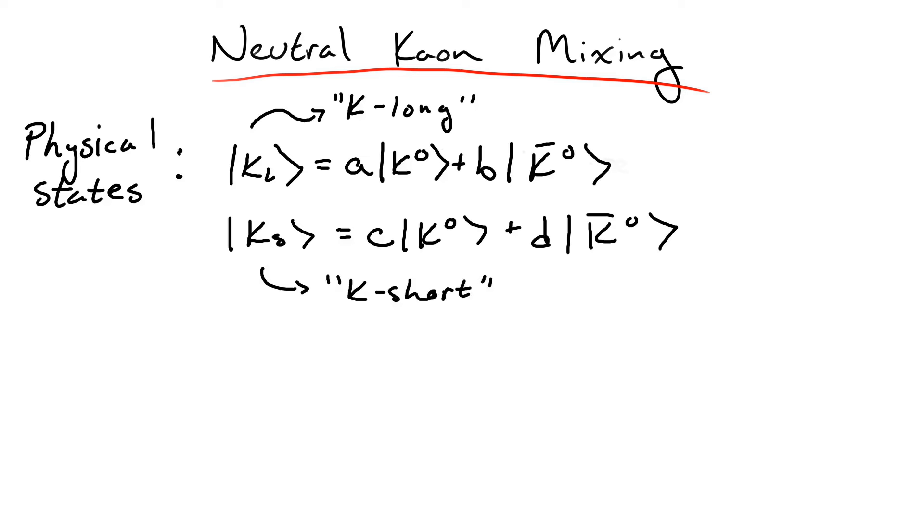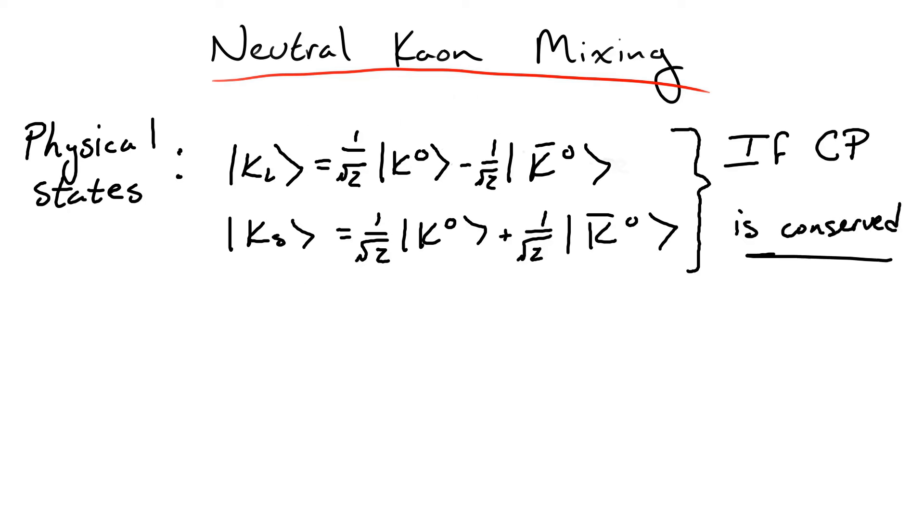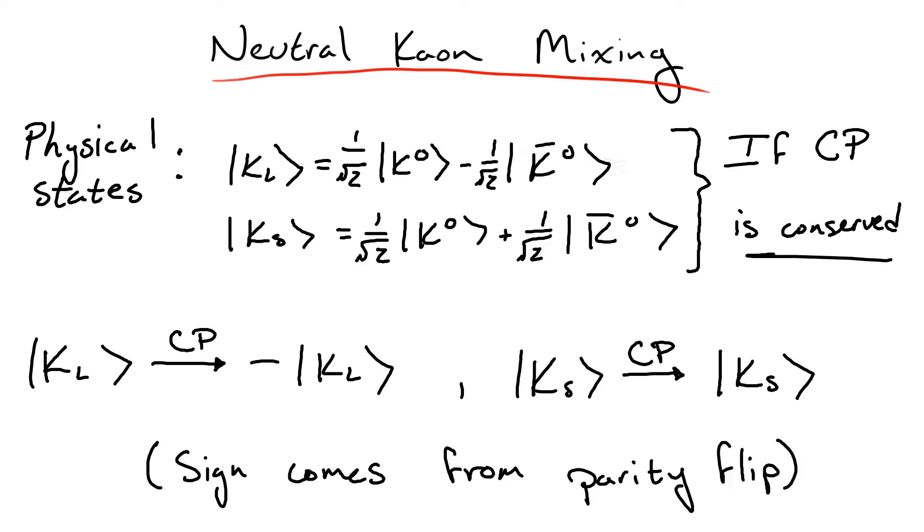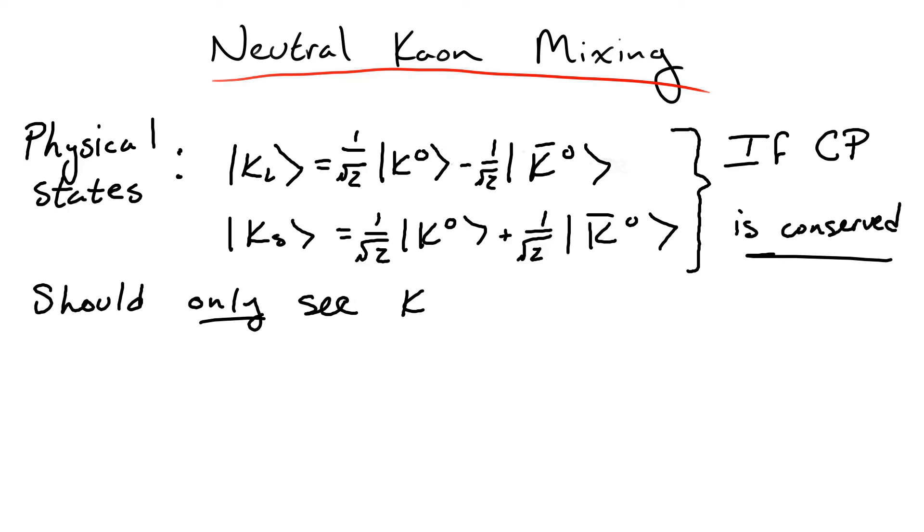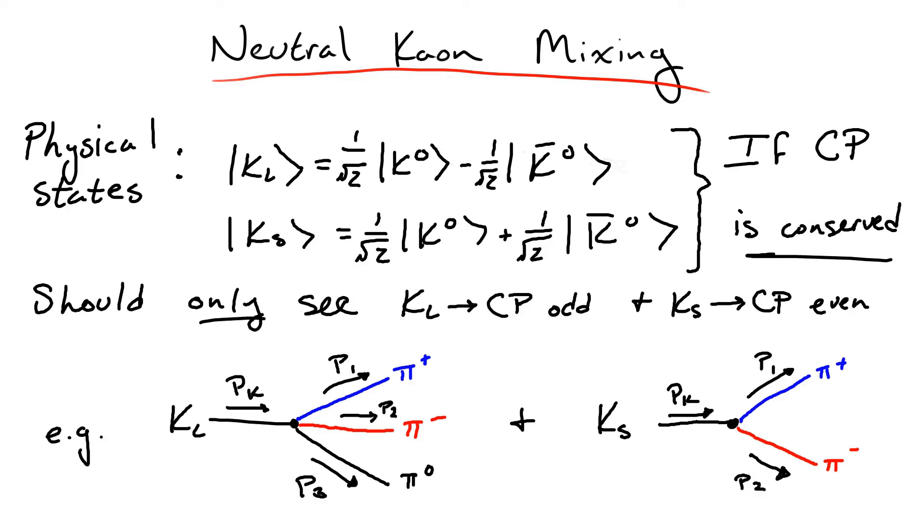If CP is a good symmetry, then we would expect the physical states, known as the K-long and the K-short, to be made up of evenly weighted mixtures of the K and K-bar interaction eigenstates, due to the fact that CP is the transformation which exchanges particles and antiparticles. Such admixtures would mean that replacing the K with a K-bar and vice versa would leave the states unchanged, aside from a total sign. In fact, the K-long would get an overall minus sign under CP, while the K-short would be unchanged. In other words, we would say that the K-long would be odd under CP, while the K-short would be even. This is very important. If CP is a good symmetry of nature, then the K-long could only ever decay into another CP-odd state, such as a state with three pions, while the K-short, on the other hand, could only ever decay to another CP-even state, like a two-pion final state.